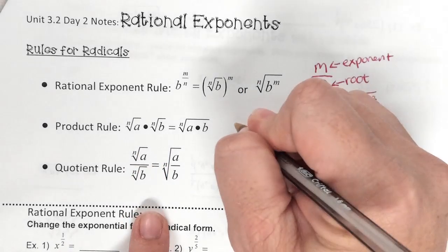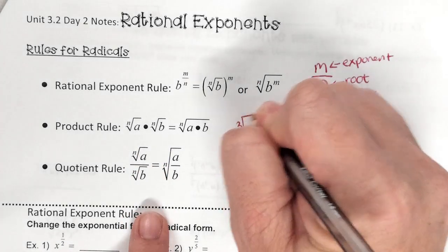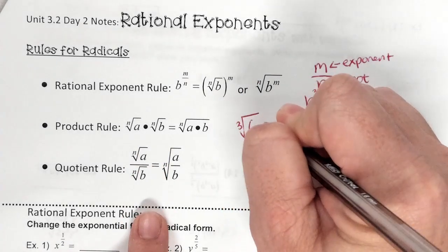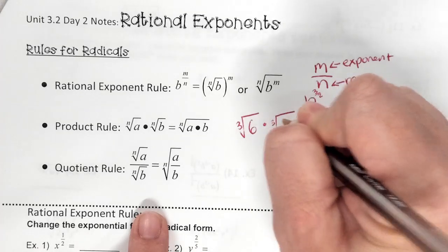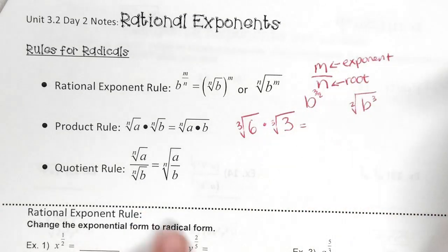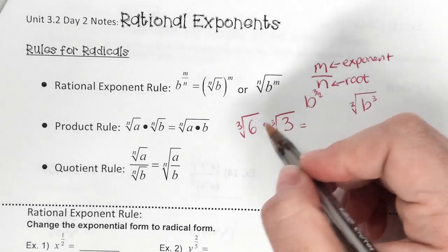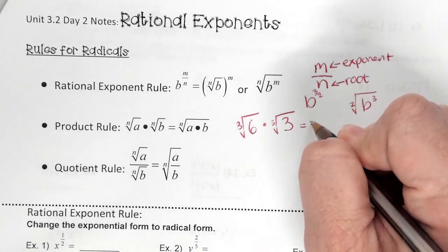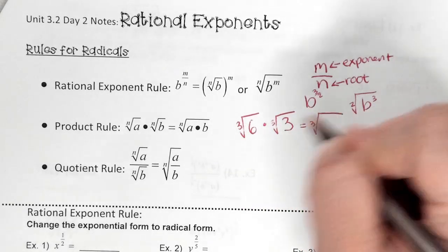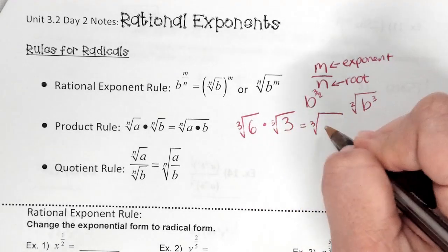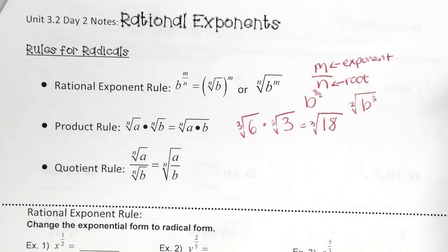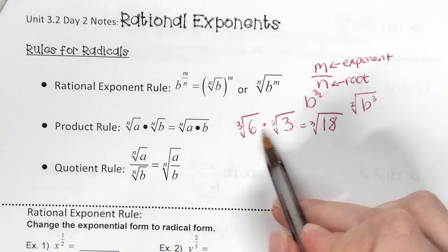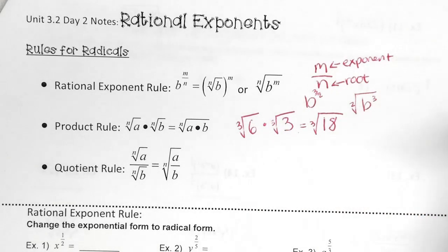For example, if we have the cube root of 6 times the cube root of 3, what would that equal? They're both cube roots, so I can put them together. What's 6 times 3? 18. So you can put them together when they have the same root.